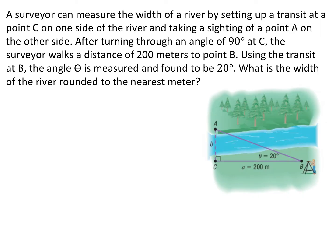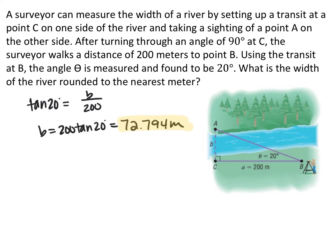For the next problem, a surveyor is measuring the width of a river. Standing at point B, they measured the distance to point C on their side of the river to be 200 meters, and the angle to point A, which is perpendicular to BC, to be 20 degrees. Since we need opposite and adjacent, we use tangent: tangent of 20 degrees equals side B over 200, so B equals 200 times tangent 20 degrees, which is approximately 72.794 meters.